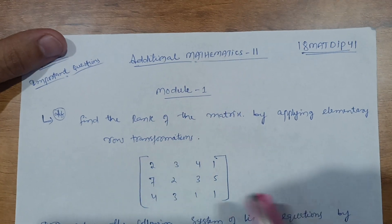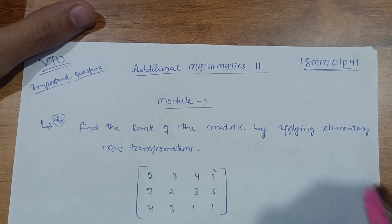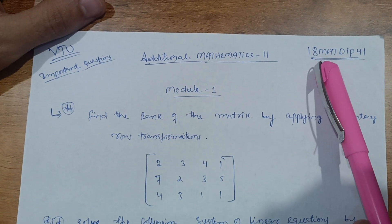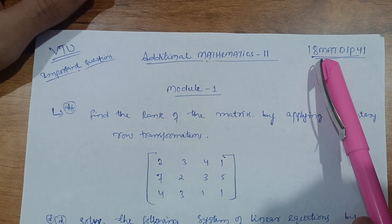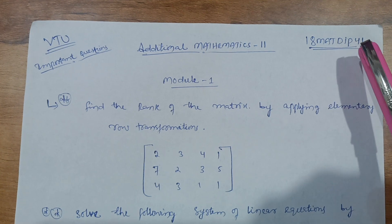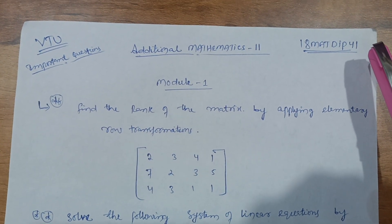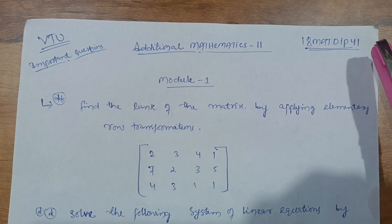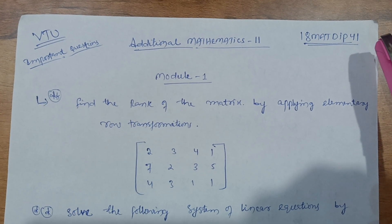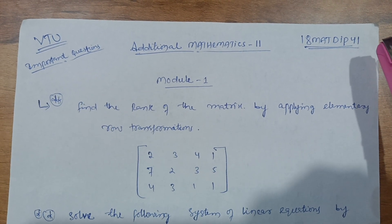Hello friends, welcome back to another video on Additional Mathematics 2, subject code 18MAT DIP 41, for diploma students. Due to the non-availability of past papers, it is very difficult to predict important questions, so I have taken some questions from the module question paper available on the VTU site, by which you can easily conquer this subject.